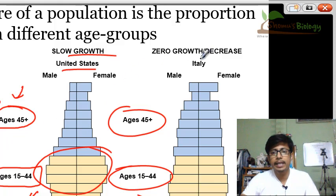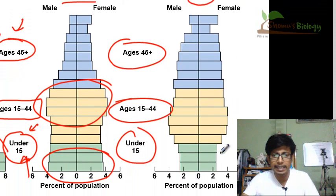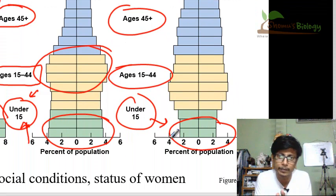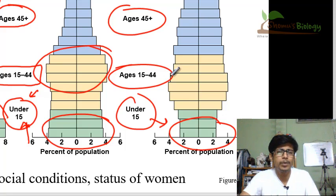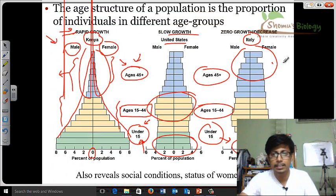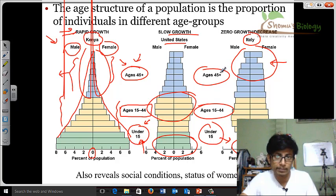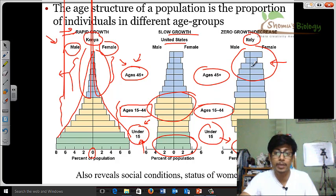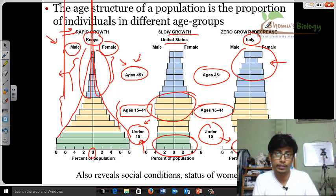The third case is Italy. In the Italian population, individuals are very few in the under-15 radius, meaning that population will not produce too many offspring in future generations. Also, the 45-plus age group is larger than the under-15 group. Those older individuals will eventually die, and more people are dying than are being born. As a result, this population will see zero growth or a decline in growth.